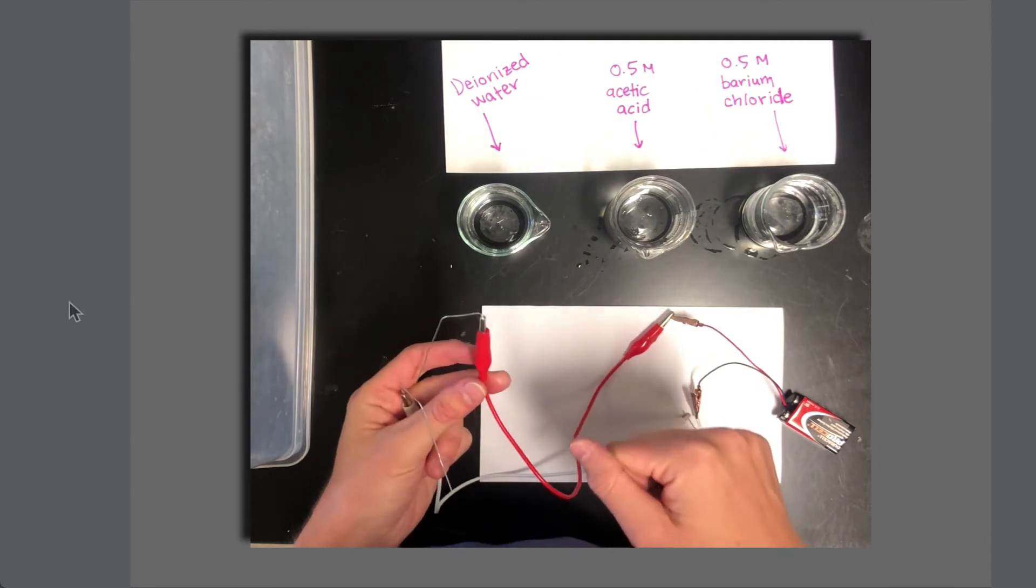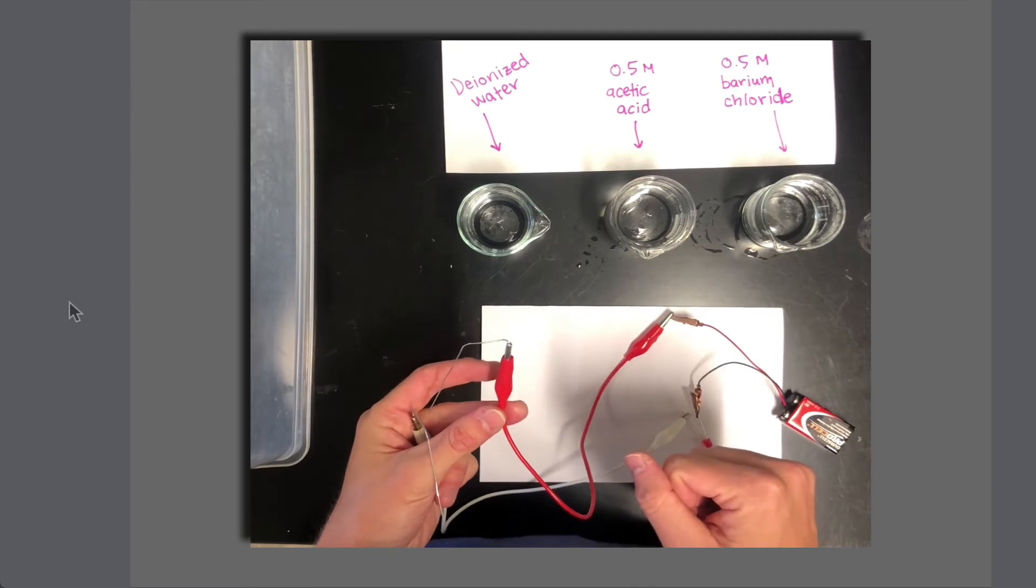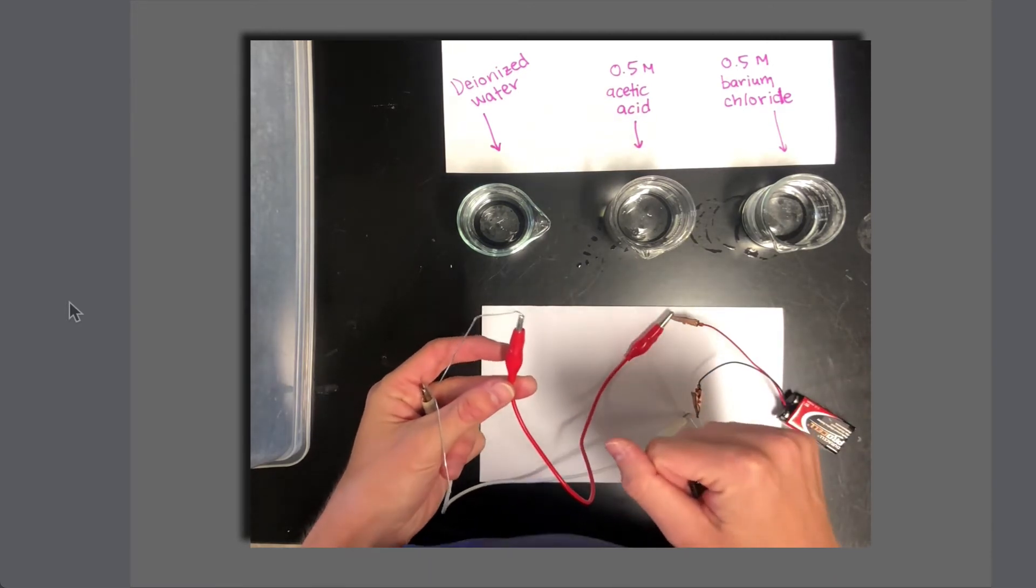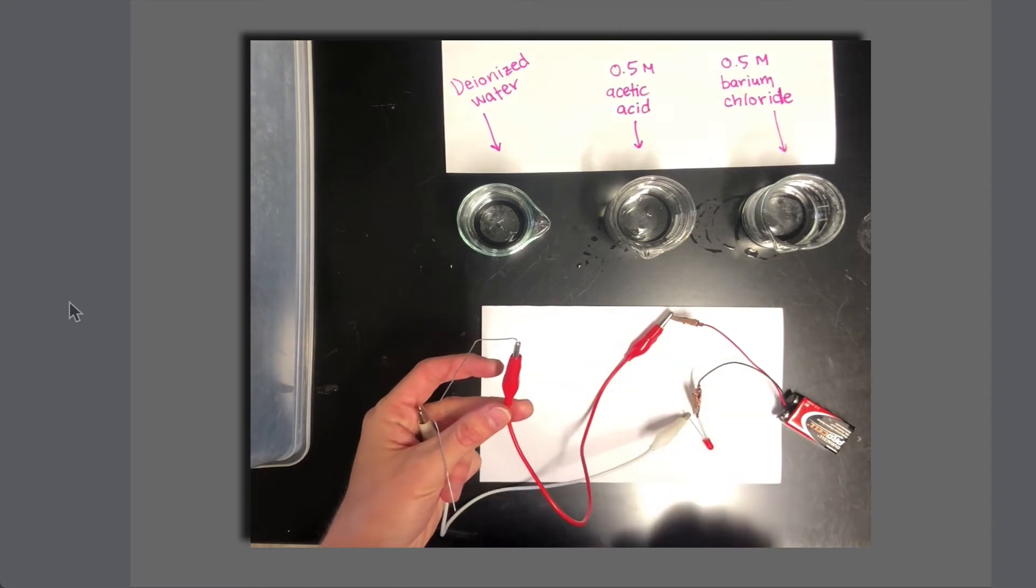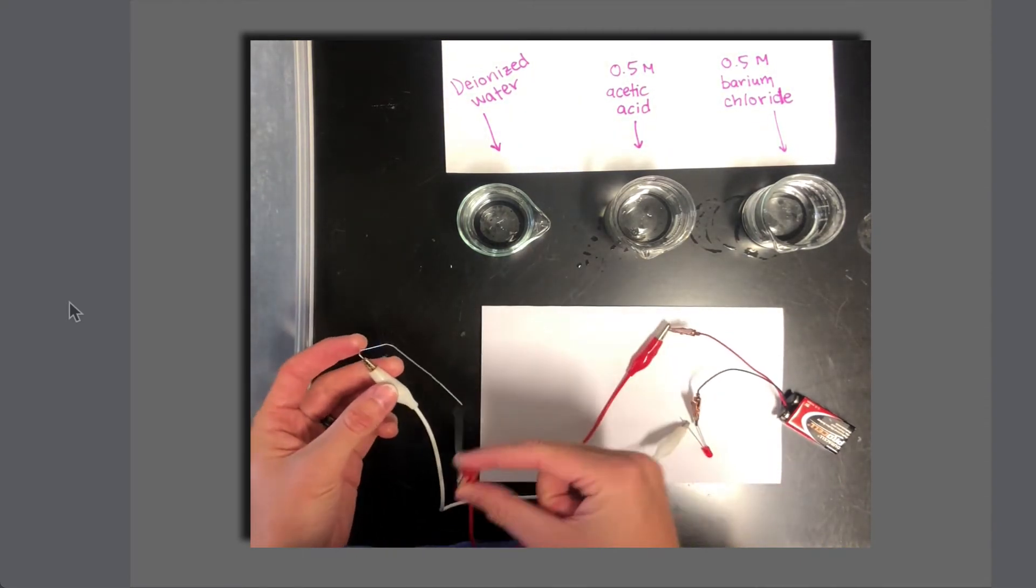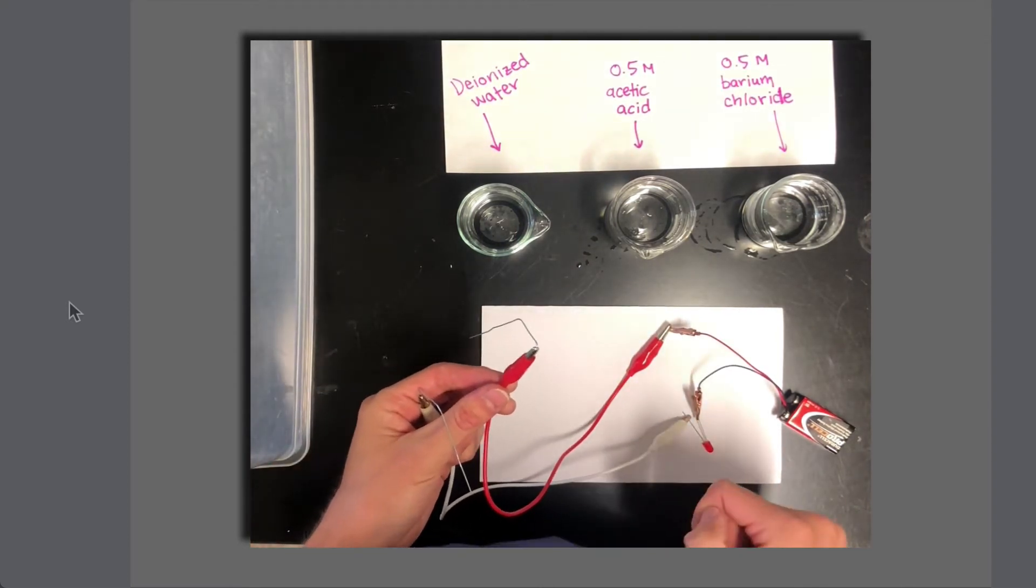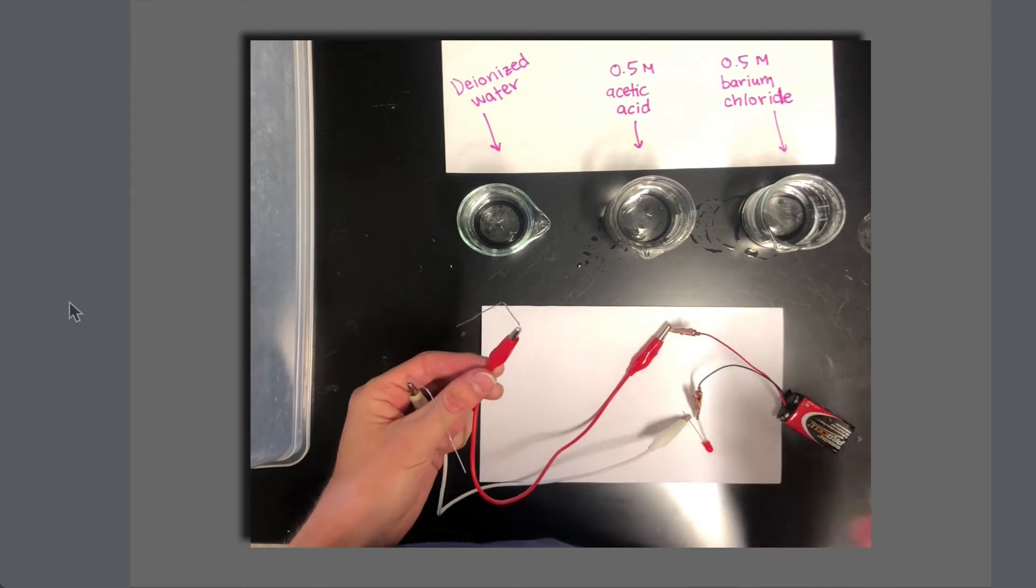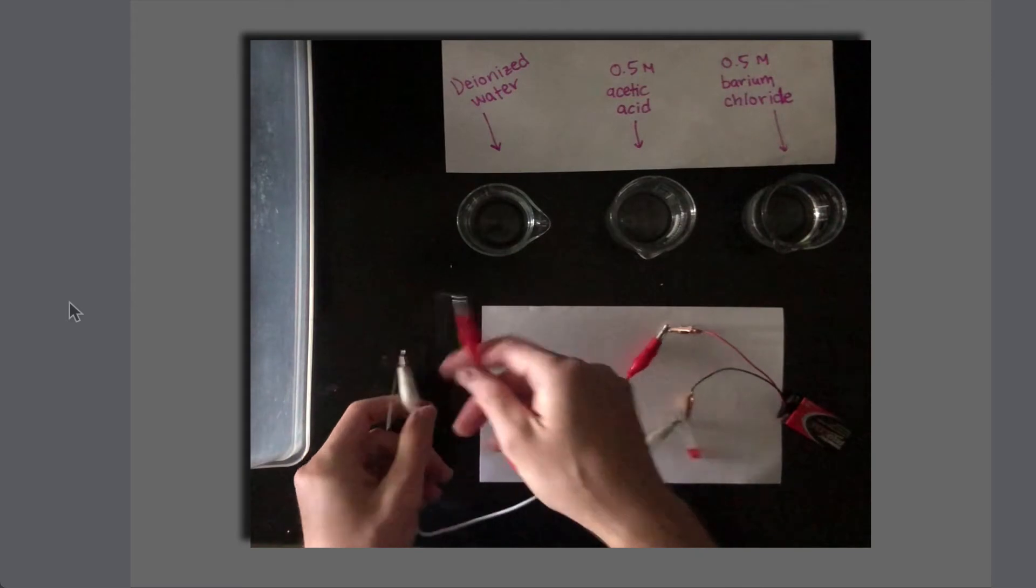The central beaker here is 0.5 molar acetic acid, and the right-hand beaker is 0.5 mole per liter barium chloride. What we're going to do is essentially try to run current through each of these solutions and see if the current does go through, observing whether the LED lights up and the extent to which it lights up. So let me turn the lights off, and we'll see what we get for this experiment.